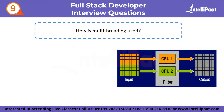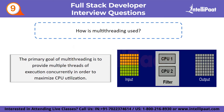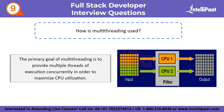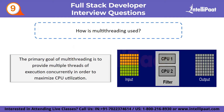Ninth question: how is multithreading used? The primary goal of multithreading is to provide multiple threads of execution concurrently in order to maximize CPU utilization. It enables multiple threads to exist within the context of a process, allowing them to execute independently while sharing process resources.